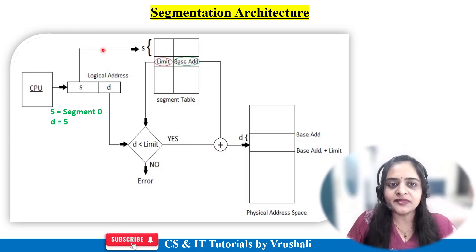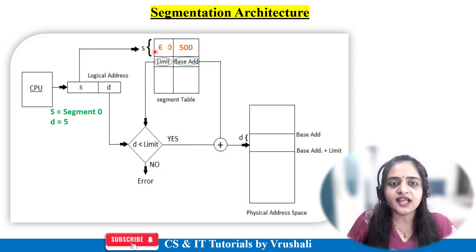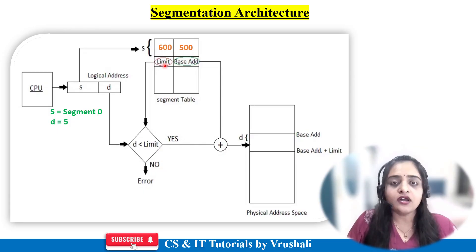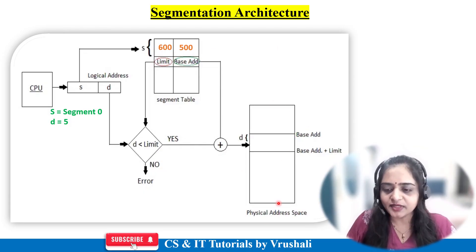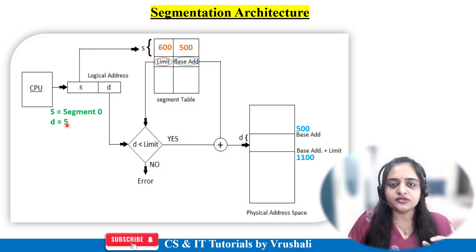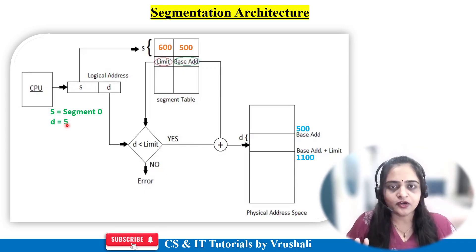The CPU wants to execute this. This logical memory is mapped with the segment table. In the segment table, segment 0's base address is 500 and its limit is 600, as per the previous example. The base address indicates that segment 0 is stored at address 500 in physical memory. There is a link between these. So 500 is the starting address in physical memory of segment 0, and the limit or length is 600, meaning 500 plus 600 equals 1100. So from 500 to 1100, segment 0 is stored in physical memory.